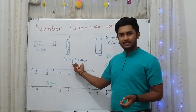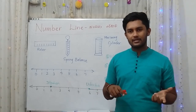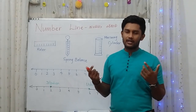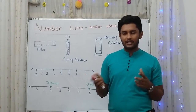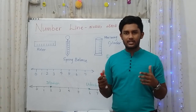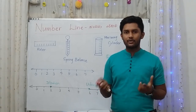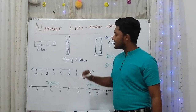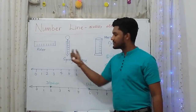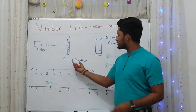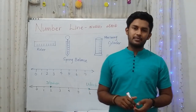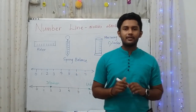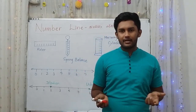Another example is the spring balance. The spring balance has been used — and is still used today — to measure the weight of goods. On the spring balance, numbers are marked according to a specific order, making it a real-time example of a number line.